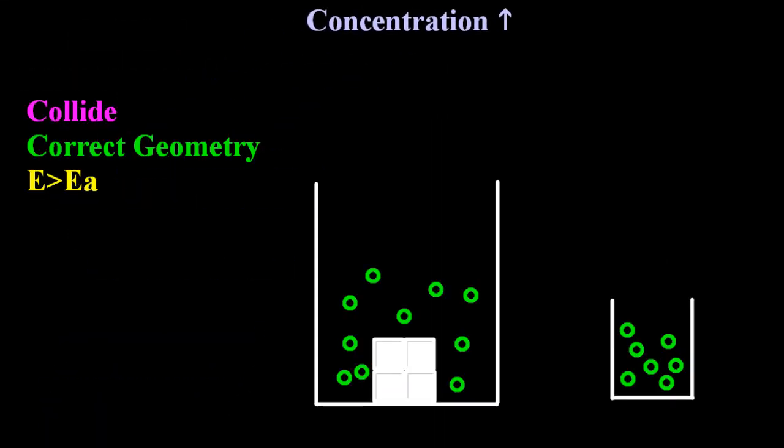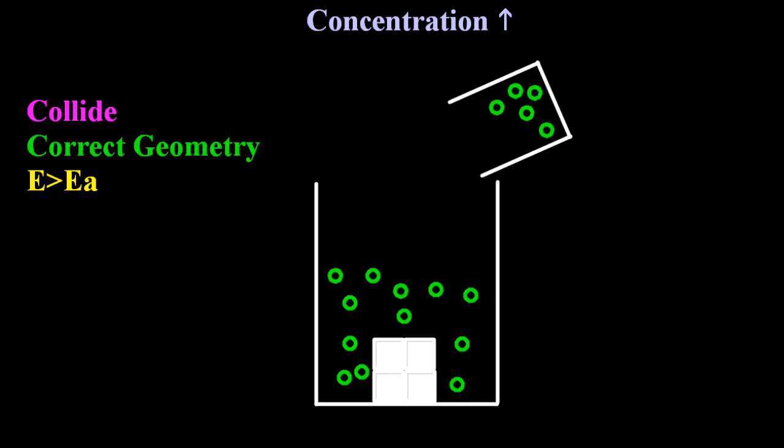First up is an increase in concentration. So if I add more reactants in, just like that. Now, what does collision theory have to say about this? Well, there are going to be more collisions if there's more reactants. Now, you can't just say more collisions. You have to say more collisions per unit time. So I'm going to put a tick there.